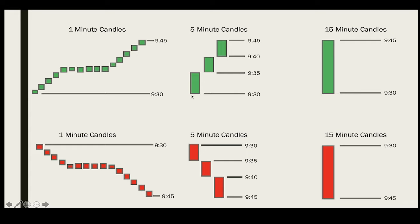The first five-minute candle starts forming at 9:30 and closes at 9:35. At 9:35, the second one starts forming and closes at 9:40, and then the third begins. The third starts forming at 9:40 and closes at 9:45. With a one-minute chart, you have 15 one-minute candles, which represent three five-minute candles, which represent one 15-minute candle.